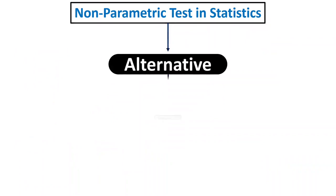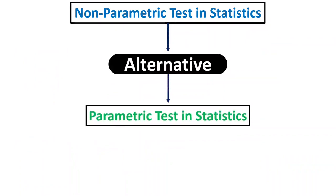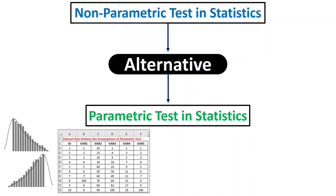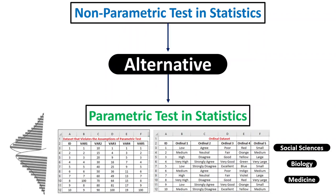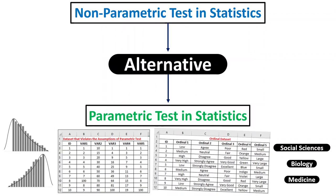Basically, non-parametric tests are useful tools for data analysis and they provide a valuable alternative to parametric tests when analyzing data that does not meet the stringent assumptions of parametric statistics, especially when dealing with non-normal distributions, small sample sizes, and ordinal data. They provide flexible and robust methods for drawing meaningful conclusions from diverse types of data. They are particularly useful in fields like social sciences, biology, and medicine where data often exhibit non-normal distributions or are measured on ordinal scales.